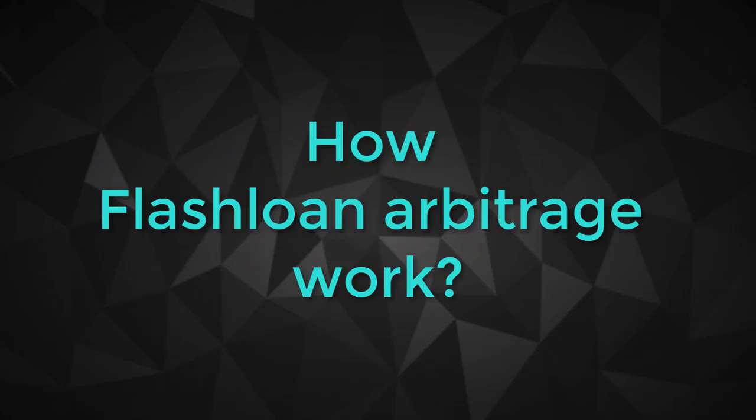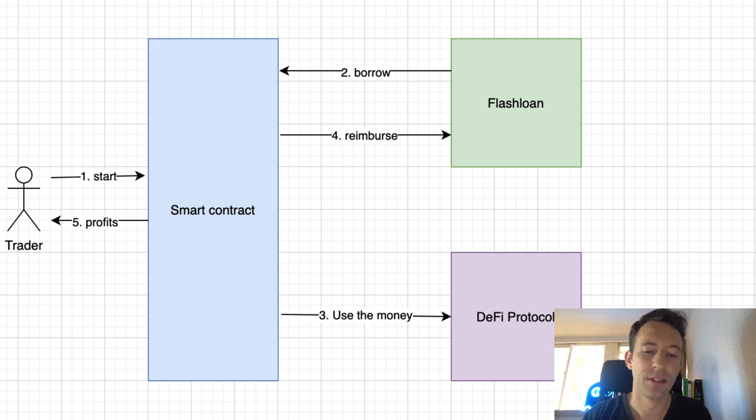To understand flash loan arbitrage, we need to separate the two concepts: flash loan and arbitrage. So first, let's start with the flash loan. A flash loan is a way to borrow a lot of money on the blockchain without any collateral and without asking anyone's permission.